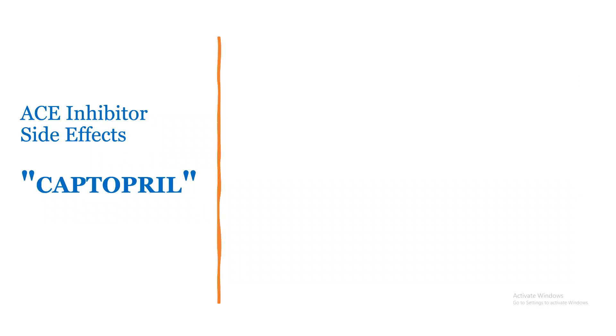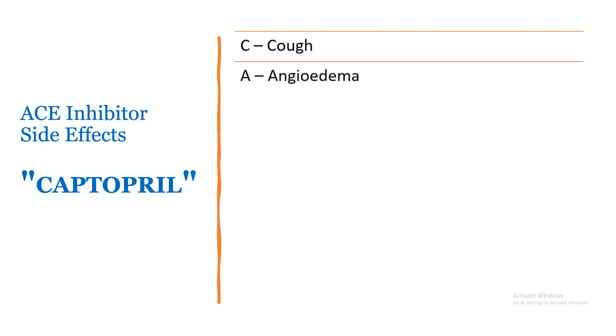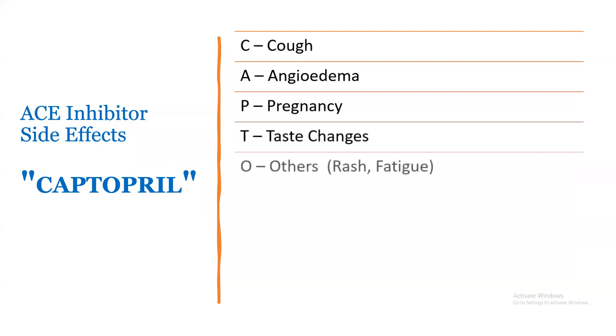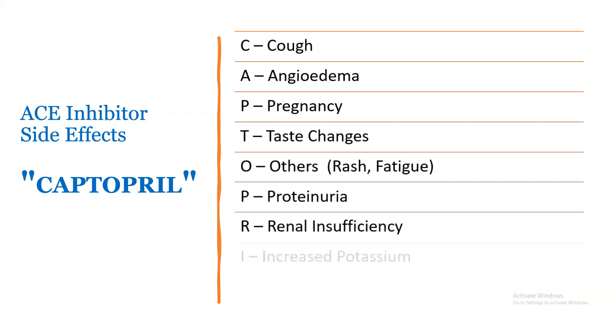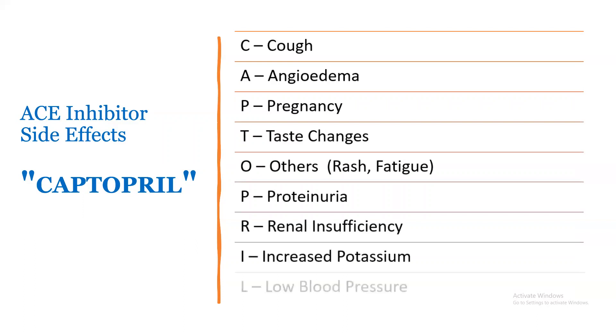Side effects of ACE inhibitors can be remembered using the word CAPTOPRIL: C for cough, A for angioedema, P for pregnancy (contraindicated), T for taste changes, O for rashes and fatigue, P for proteinuria, R for renal insufficiency, I for increased potassium, and L for low blood pressure.